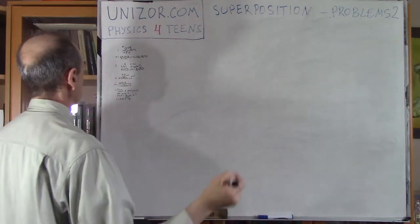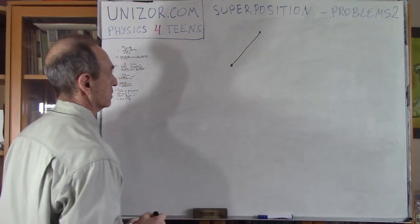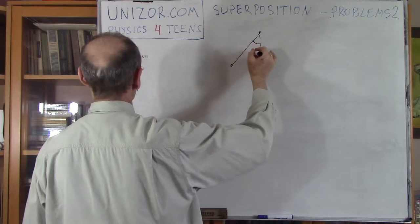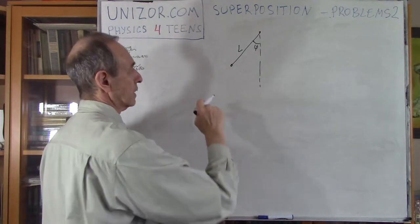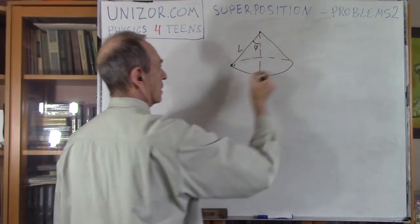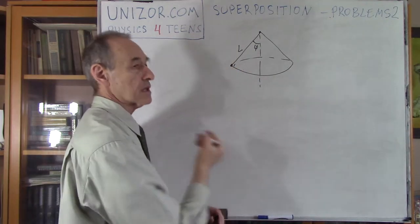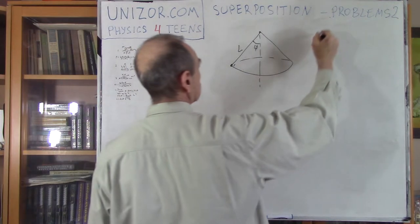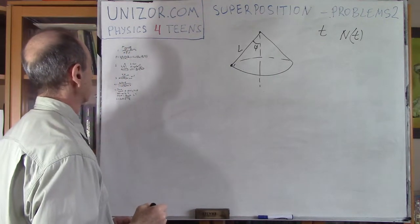Next problem: you have an object on a thread of length L. There is an angle phi between the thread and the vertical. The object is launched to do circular movement in a horizontal plane, making a circular trajectory. I have to find the number of rotations during a given time T.